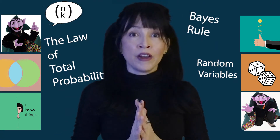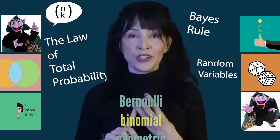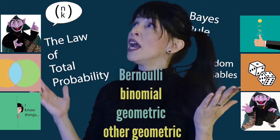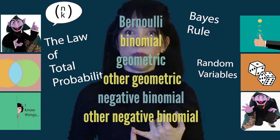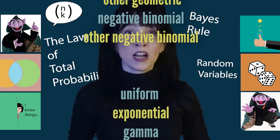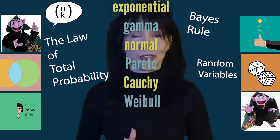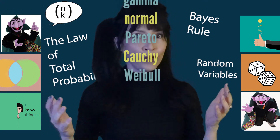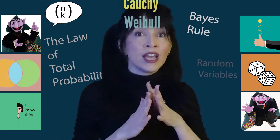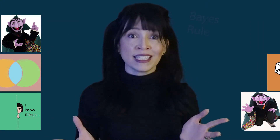We're going to talk about all of the major distributions: the Bernoulli, the binomial, the geometric, the other geometric, the negative binomial, the other negative binomial. We're going to talk about the continuous uniform distribution, the exponential distribution, the gamma distribution, the normal distribution, the Pareto, Cauchy, and Weibull distributions, and all sorts of properties of these distributions and how they connect to each other.